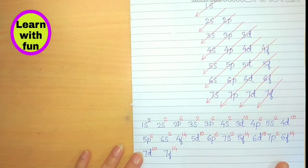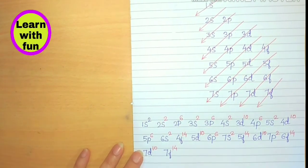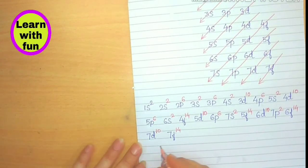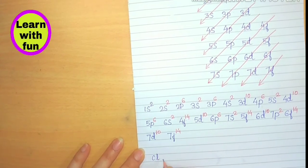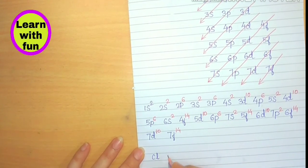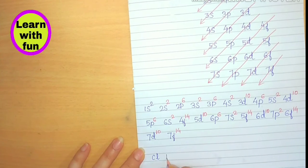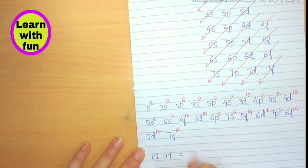So this is the electronic configuration. This way you can write the electronic configuration of any element. Now take an example of chlorine. Chlorine is having 17 electrons. How many electrons are there in chlorine? 17. So let's write the electronic configuration.